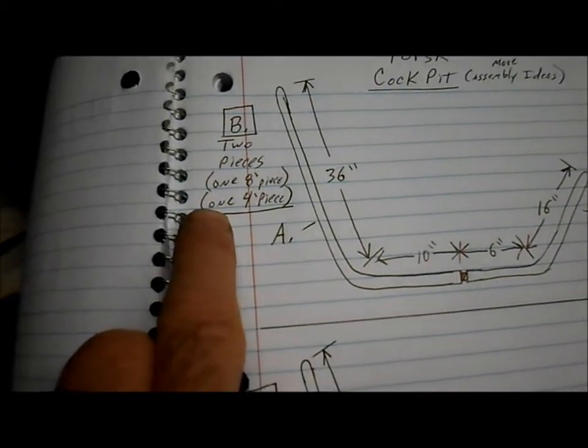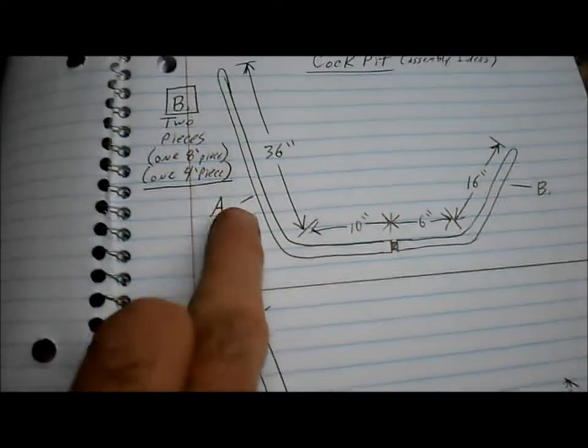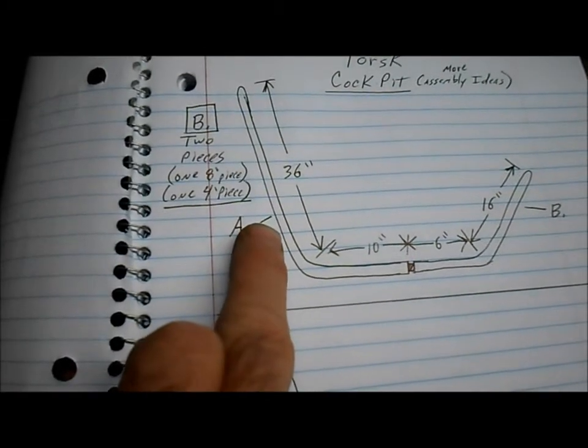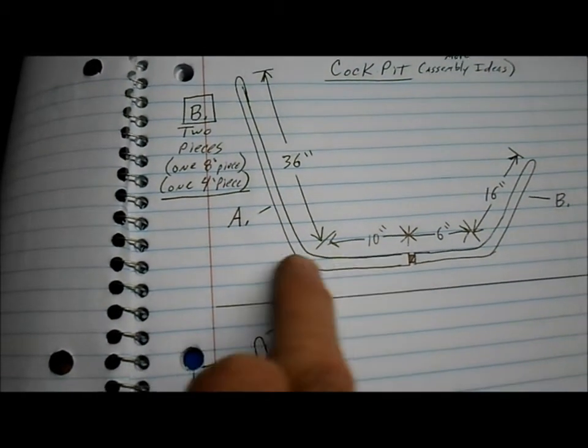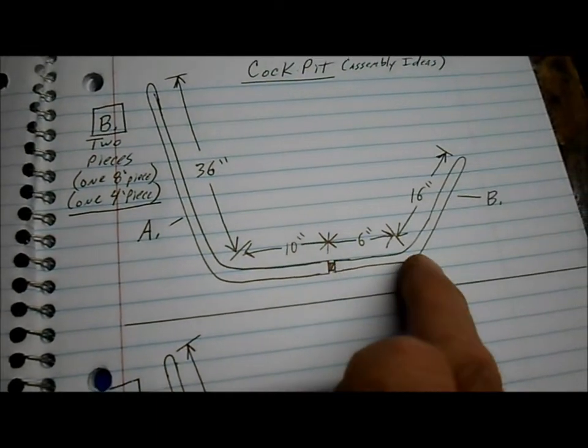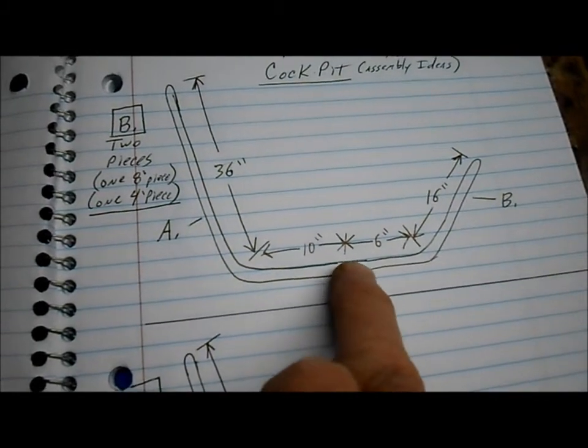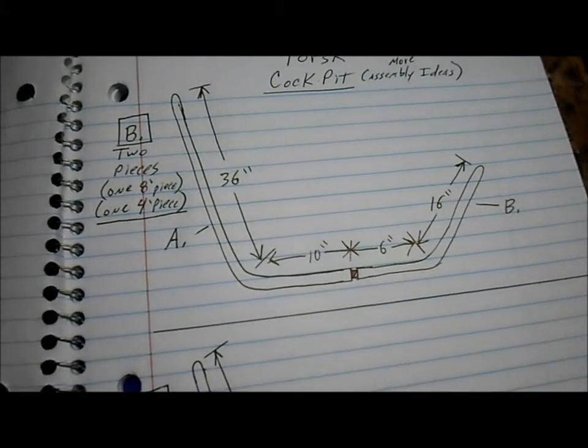Plan B would be to use two pieces. One would be about an 8 foot piece that would consist of the roll bar seat back and half of the floor. And then about a 4 foot piece that would consist of the rest of the floor and the steering support. And just connect them, weld them together here at the floor.